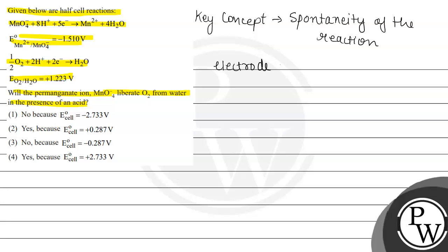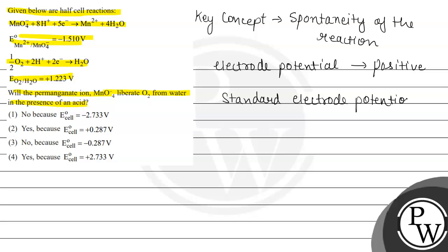If the electrode potential value is positive, then the reaction is spontaneous. The standard electrode potential for hydrogen is zero volts. If the standard electrode potential value is greater than zero, it is spontaneous. If the electrode potential is negative, then the reaction is said to be non-spontaneous.